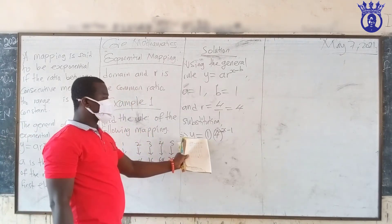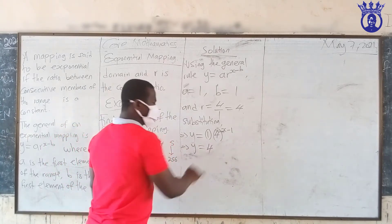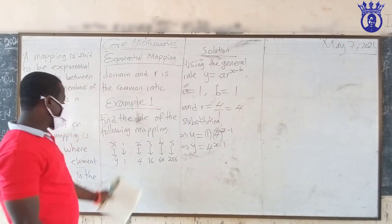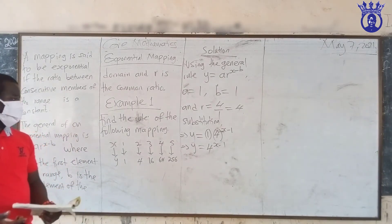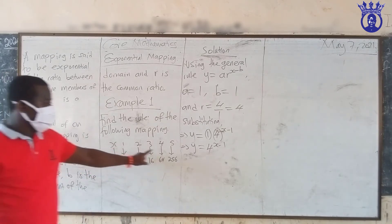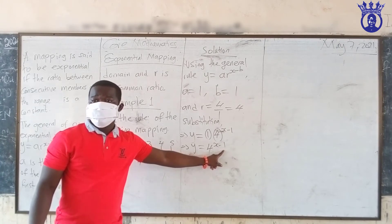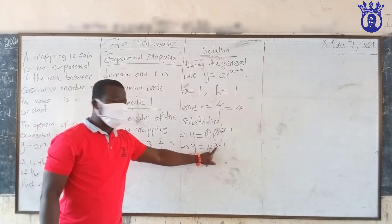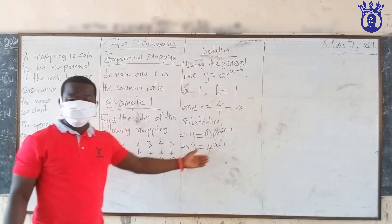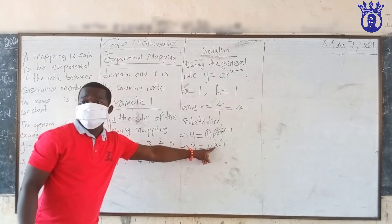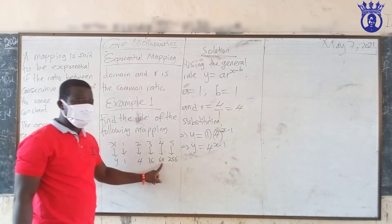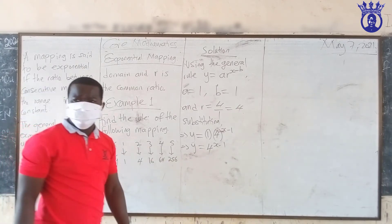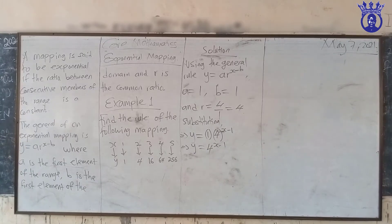Let's verify: if x equals one, then four raised to the power (1 minus 1) equals four to the power zero equals one. If x equals two, four raised to the power one equals four. If x equals three, four raised to the power two equals sixteen. The rule is working correctly.